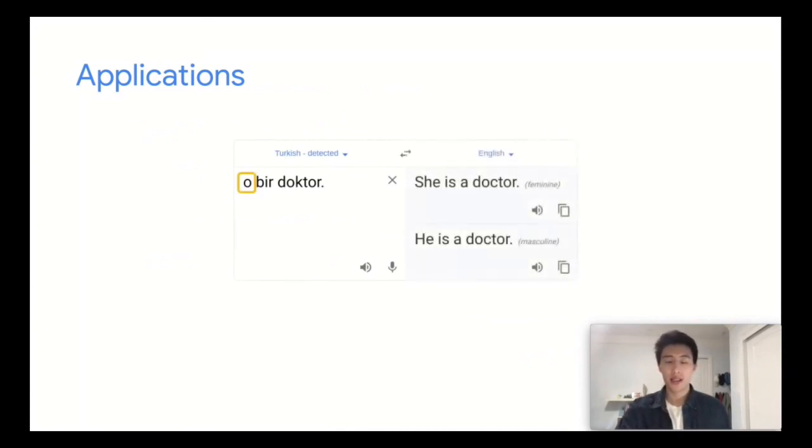Rewriting gendered sentences to be gender-neutral has applications in multiple domains. For instance, in machine translation, when translating from languages with gender-neutral pronouns, such as Turkish, to English, some machine translation systems like Google Translate will provide both masculine and feminine translations. In these situations, providing a gender-neutral translation is also a very fitting option, such as they are a doctor.